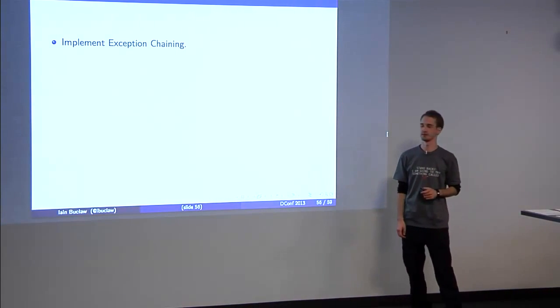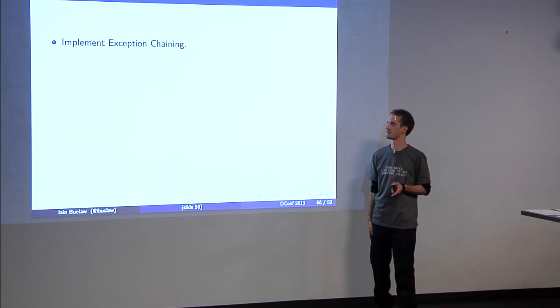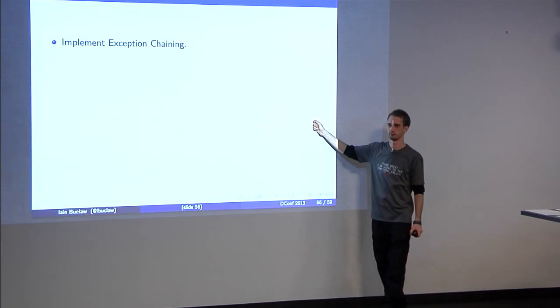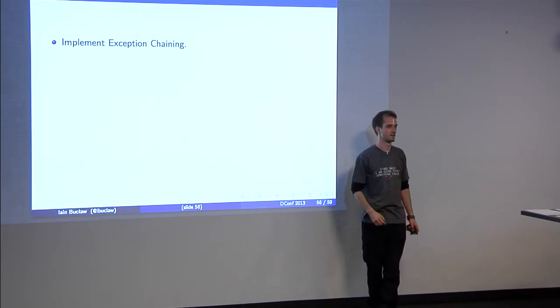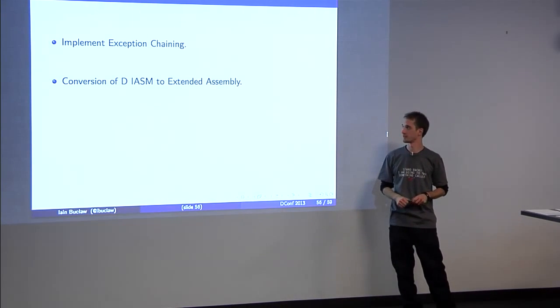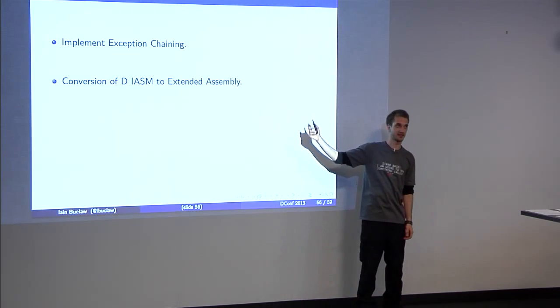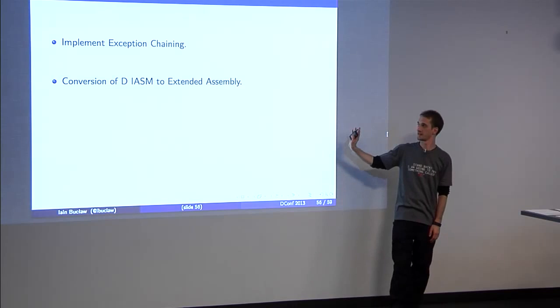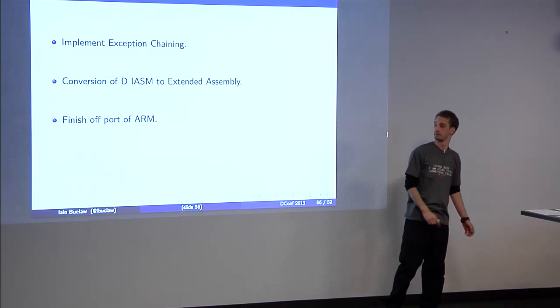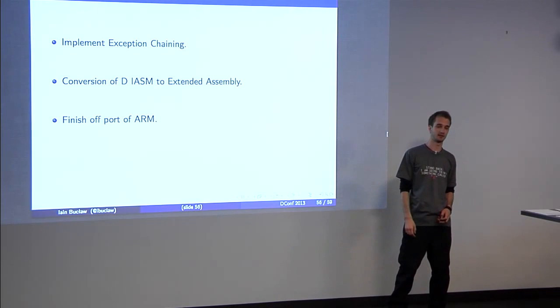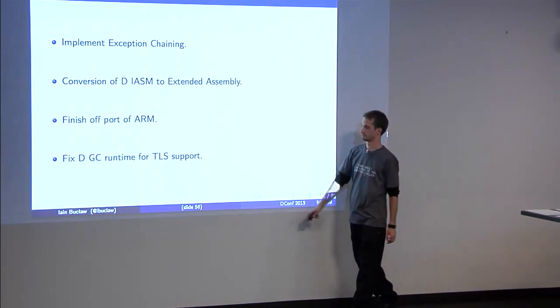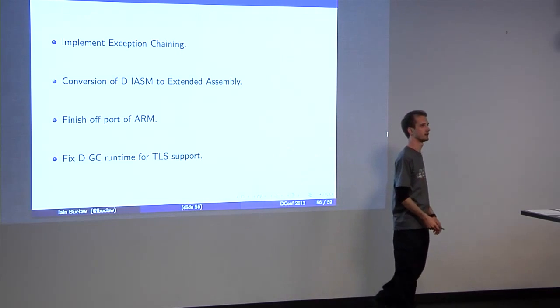Library support wise, we still don't do exception chaining. I know David's had a brief look into it from the LDC side. But we should really get down and get that resolved. Well, I'm not sure if you're aware too much, but LDC and GDC uses libunwind, rather than DMD, which has its own bespoke exception table. One thing that's possibly on the table is to convert all the inline assembler into extended assembly. It's not really a big deal. Things tend to work just fine as is. Although probably one argument for that would be OSX and fiber support. Again, finish off the port of ARM, although I'm pretty certain most is already there, and it's just one or two compiler tweaks that need to be done. And, again, fix the GCC runtime for TLS support for reasons that I've already mentioned.